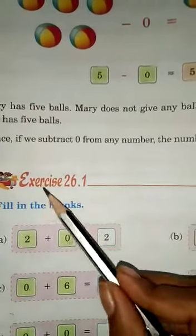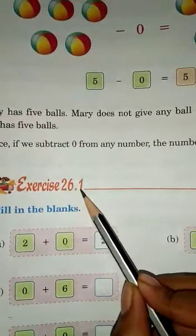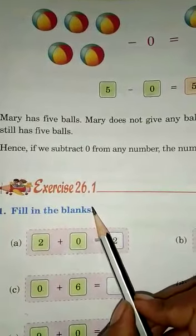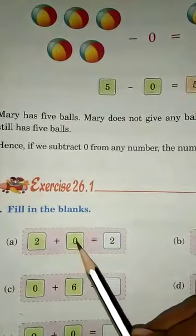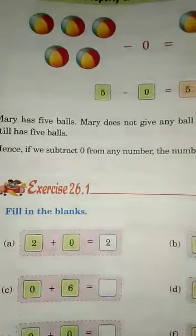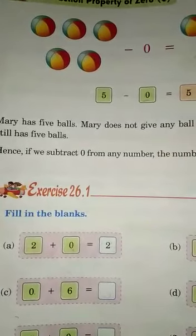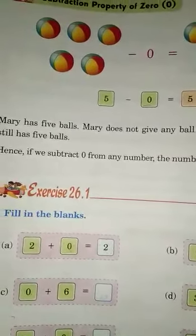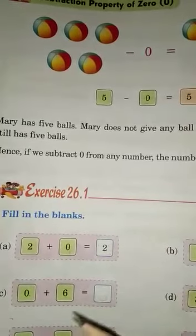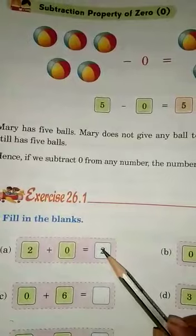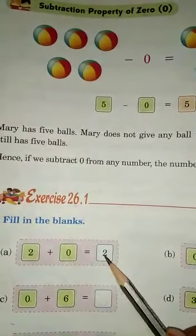Now, come to the exercise. Exercise 26.1, Question 1. Fill in the blanks. 2 plus 0 equals what? If we add 2 plus 0, which number will come here? 2, because the number remains the same.